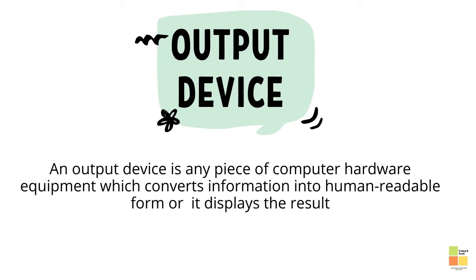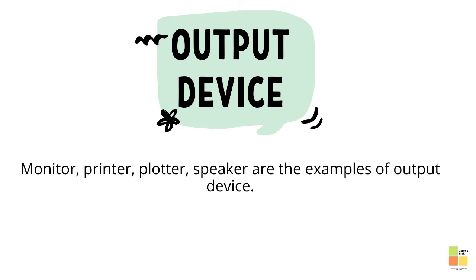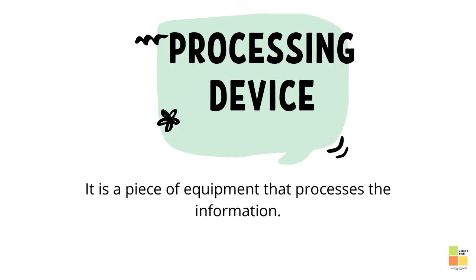Output device: an output device is a piece of computer hardware equipment which converts information into a human readable form, or it displays the result. Monitor, printer, plotter, and speaker are examples of output devices.